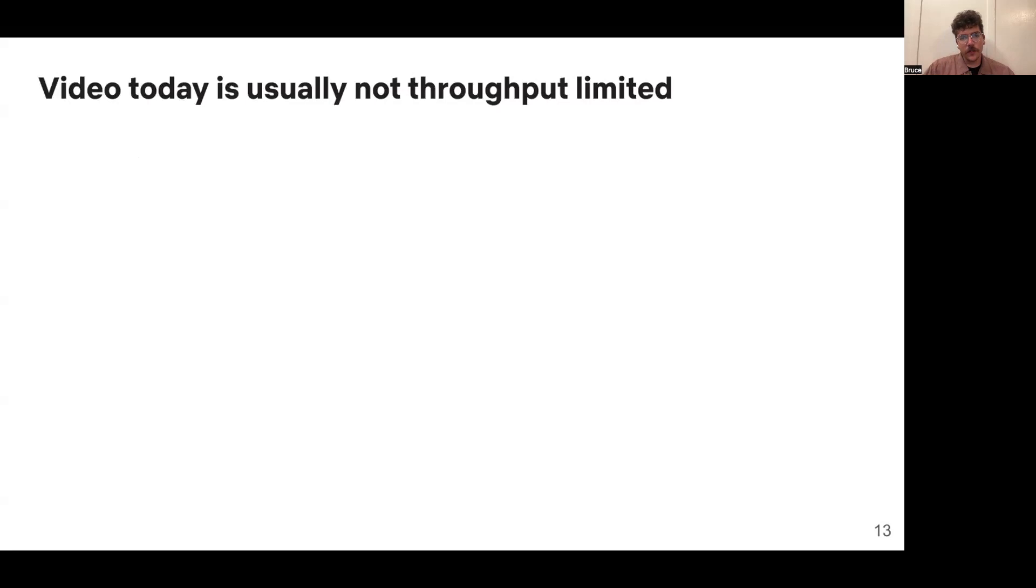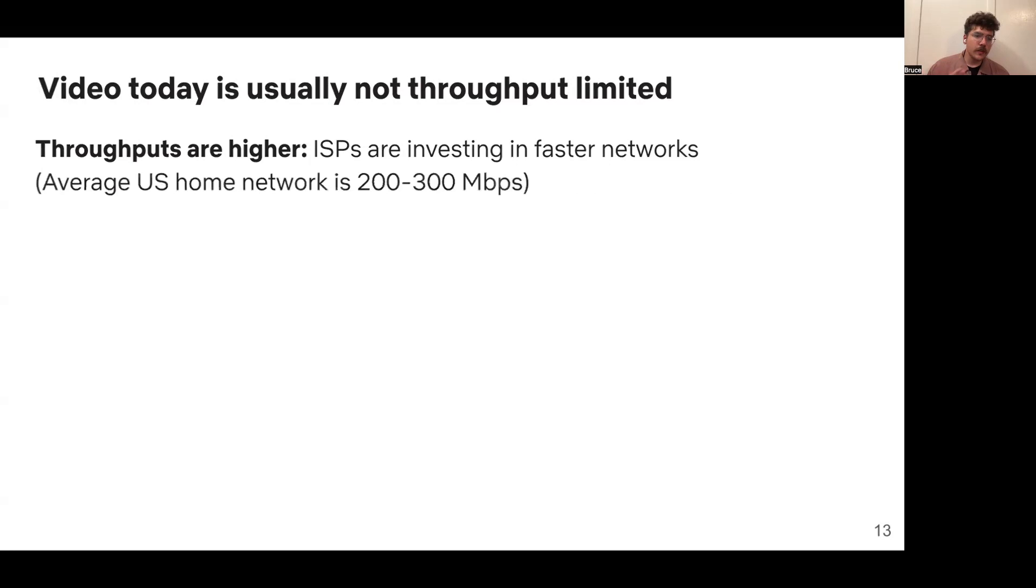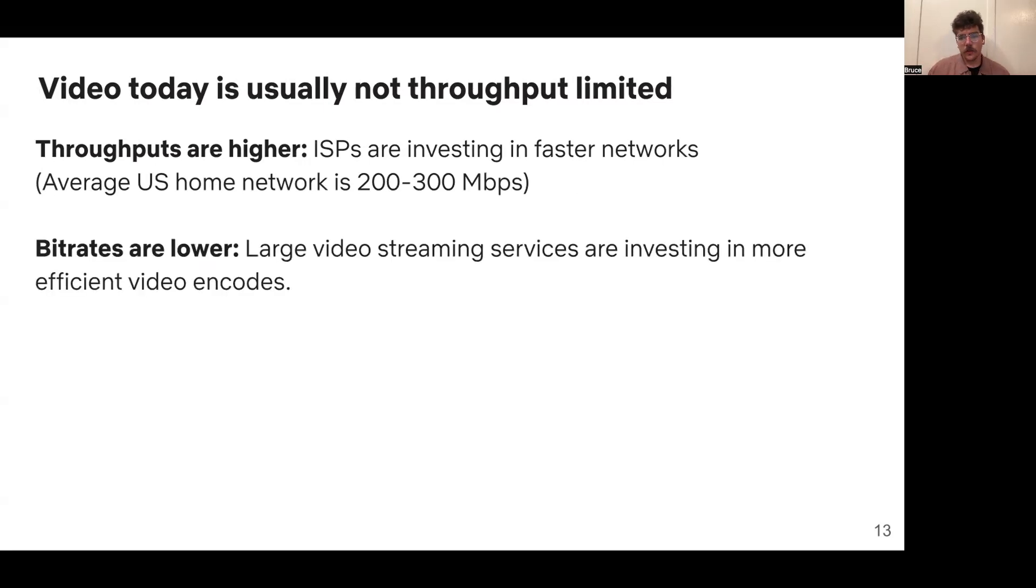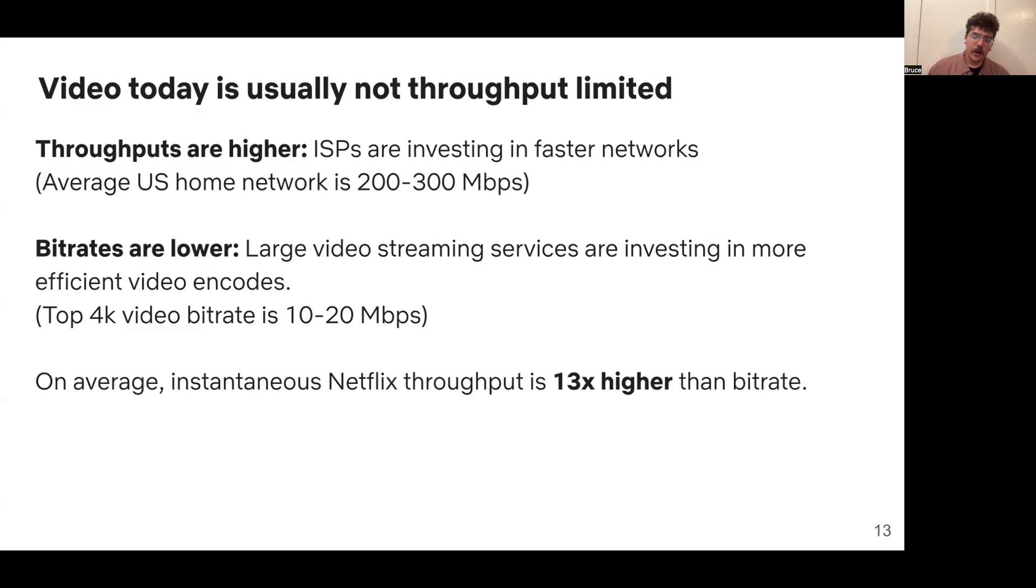The insight that lets us make progress here is that video today is not usually limited by throughput. There are two trends that are helping with this. One is that ISPs around the world are investing in faster networks. Data for the U.S. is very available, and in the U.S. last year, your average U.S. home network was about 200 to 300 megabits per second. At the same time, large video streaming services are investing more in more efficient video encoding technologies because this directly translates to the cost of sending the video on the internet. For instance, even the top quality 4K video today is about 10 or 20 megabits per second. And all of this together, when we look at Netflix data, on average, the instantaneous throughput that a Netflix video is getting is about 13 times higher than the video bitrate, so there's a lot of extra throughput in this system.